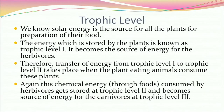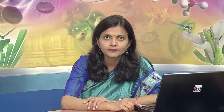Solar energy is the source for all plants for food preparation, and the energy stored by plants is known as trophic level 1. It becomes the source of energy for herbivores — trophic level 2. This chemical energy stored at trophic level 2 becomes the source of energy for carnivores at trophic level 3. A part of the chemical energy at level 3 is then transferred to omnivores at trophic level 4. In a food chain, members at successively higher levels become smaller in number.